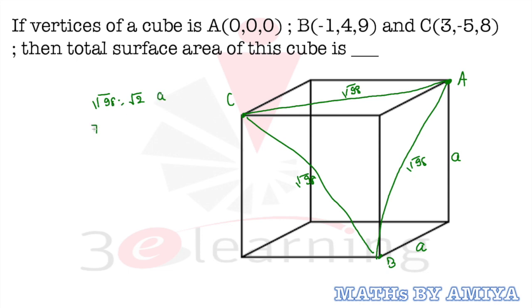√98 is 7√2, which equals √2a. The roots cancel, so the side of this cube is 7 units.